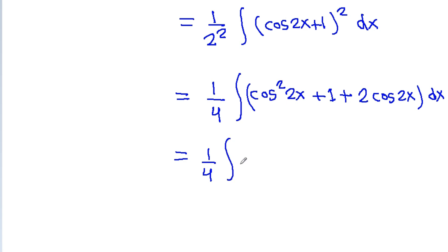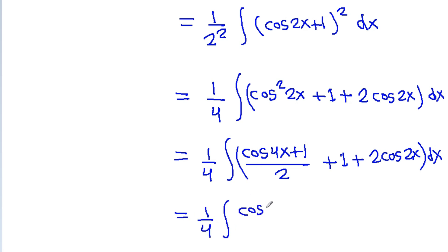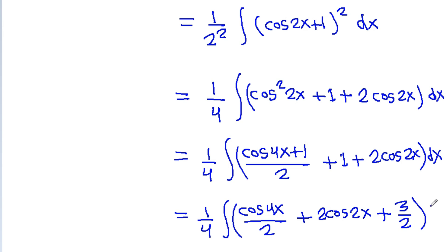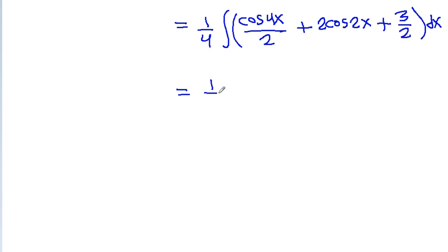We substitute cos²2x = (cos4x + 1) / 2, giving us (1/4) times the integral of (cos4x + 1)/2 + 2cos2x + 1 dx, which simplifies to (1/4) times the integral of cos4x + 2cos2x + 3/2 dx.